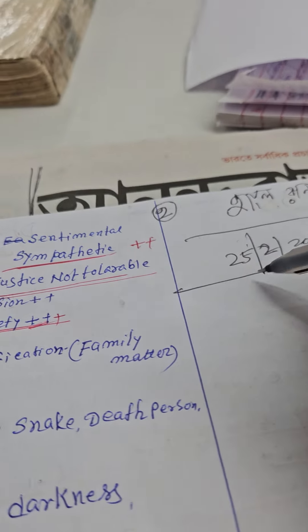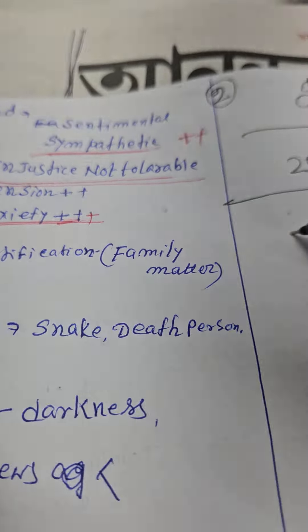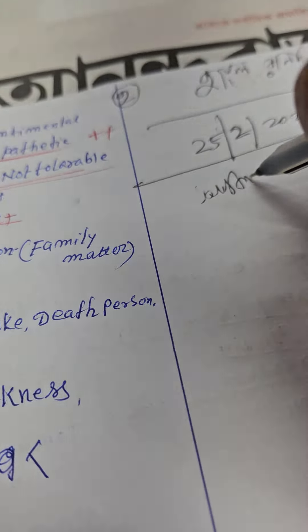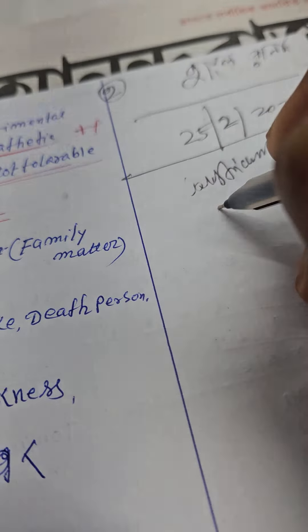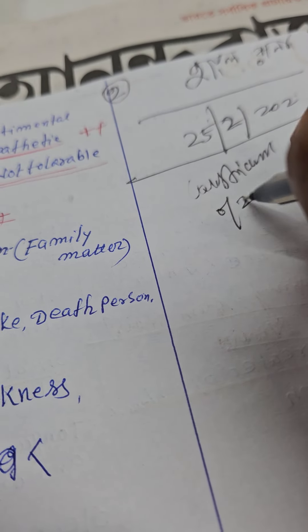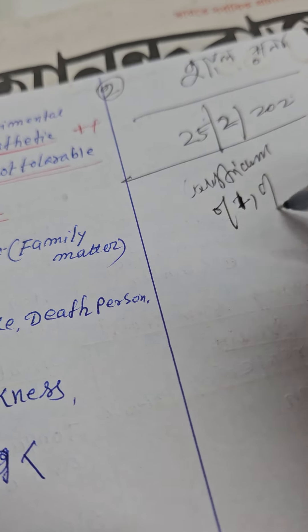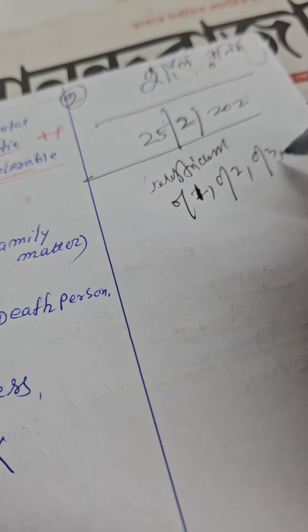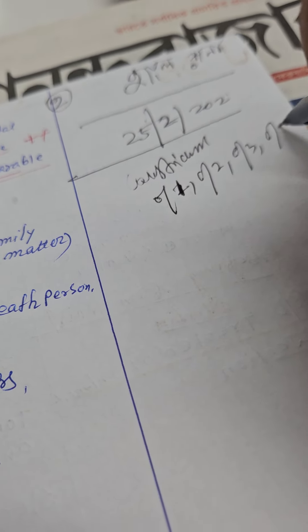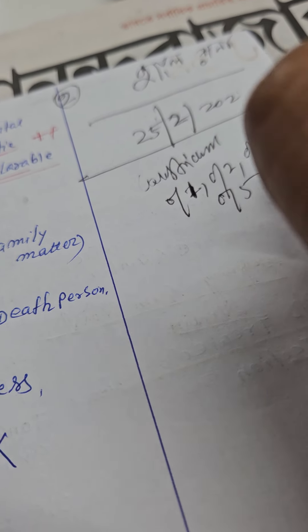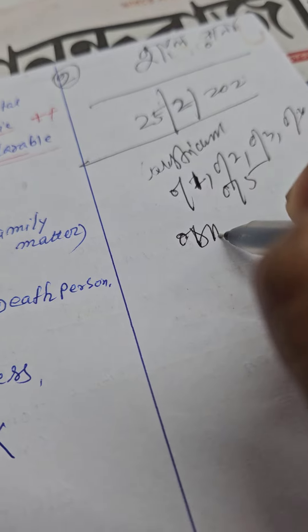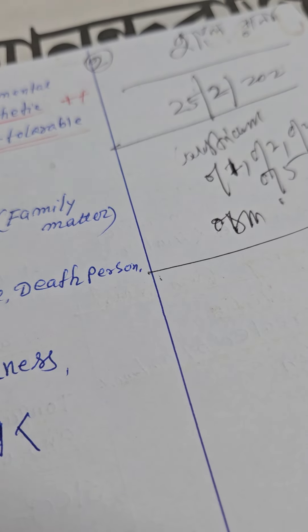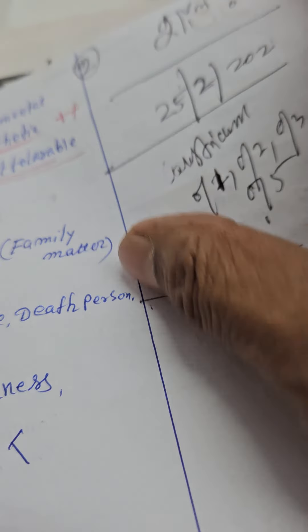So let's try this medicine — Causticum. I like to prescribe in the 50 millesimal (LM) scale of potencies: LM1, LM2, LM3, LM4, LM5, etc., once daily in the morning. In addition to that, the auxiliary measures advised to the patient are physiotherapy and massage. Let's see the result — I shall share with my friends.